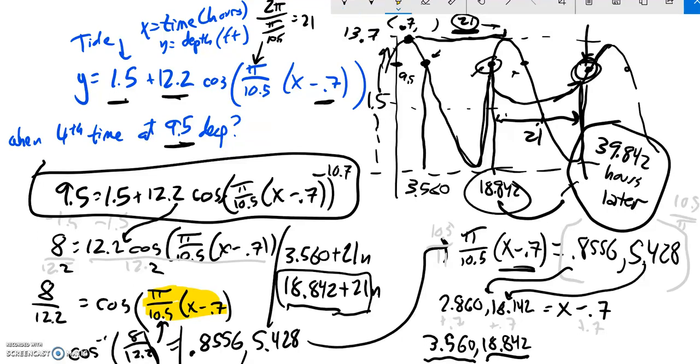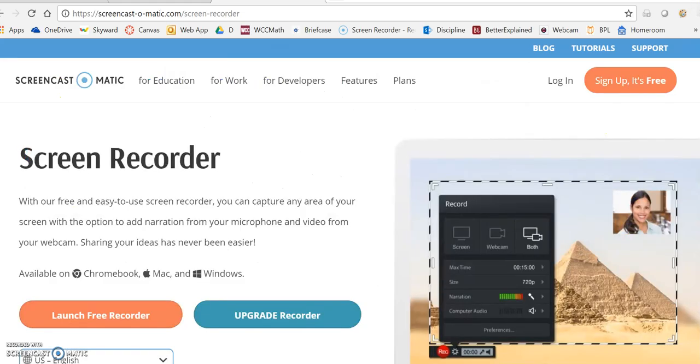And what I can do to check my answer, it's pretty easy to do. I can take this value and plug it back in here, and this should spit out then about 9.5. So it's easy to check.